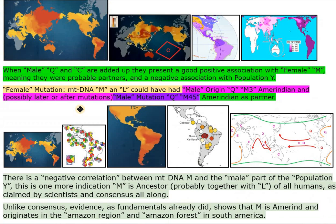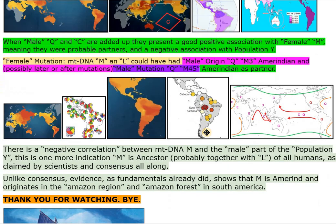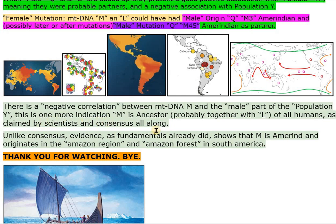Female mutation: MTDNA-M and L could have had male origin Q, M3 Amerindian and, possibly later or after mutations, male mutation Q, M45 Amerindian as partner. There is a negative correlation between MTDNA-M and the male part of Population Y; this is one more indication M is ancestor, probably together with L, of all humans, as claimed by scientists and consensus all along. Unlike consensus, evidence shows that M is Amerind and originates in the Amazon region and Amazon forest in South America.